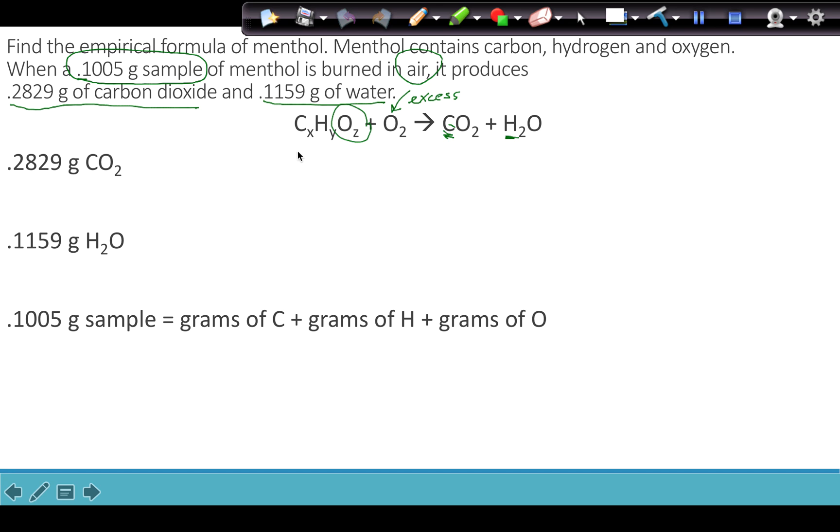We're going to keep in mind that this is a limiting reagent problem. We are going to burn the unknown completely so that all of the carbons get converted into the carbons of carbon dioxide and all of the hydrogens get converted into the hydrogens of water. That means that we can work backwards and start from our amount of carbon dioxide to get backwards to our amount of carbon.